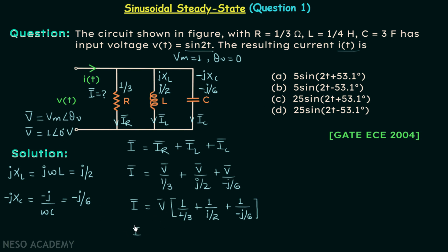So we have I phasor equal to 1 angle 0 degrees. And when you simplify this you will have 3 + j4. And when you convert this to the polar form you will have 5 angle 53.13 degrees.